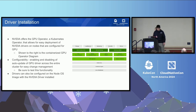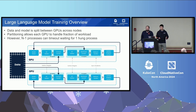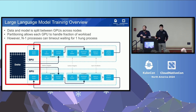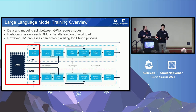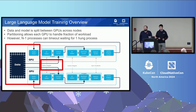Now we want to dive deeper into how exactly a large language model training workload looks. When we train large models, they do not fit in a single machine, so we need to implement sharding techniques to distribute both data and model weights across multiple GPUs. In this diagram, each GPU maintains a sharded copy of the model on its GPU, holding only a portion of parameters to optimize memory usage.